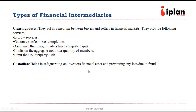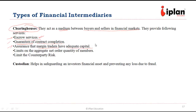Clearing houses are another important financial intermediary acting as a medium between buyers and sellers in financial markets. They can provide escrow services, where two parties agree on conditions of payment under certain circumstances. They can also provide guarantees on contract completion, or assurance that margin traders have adequate capital — ensuring that if the margin falls it will be given to the clearing house, which takes responsibility for the successful execution of the trade and payment.